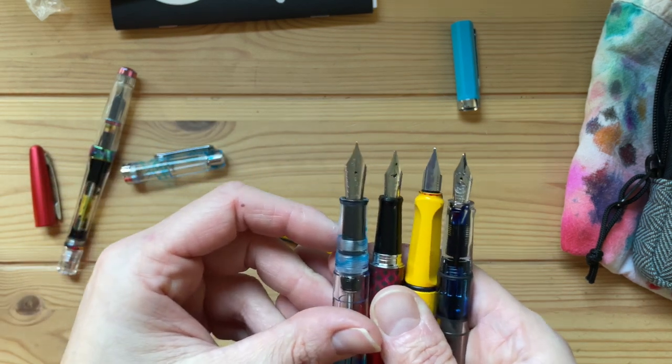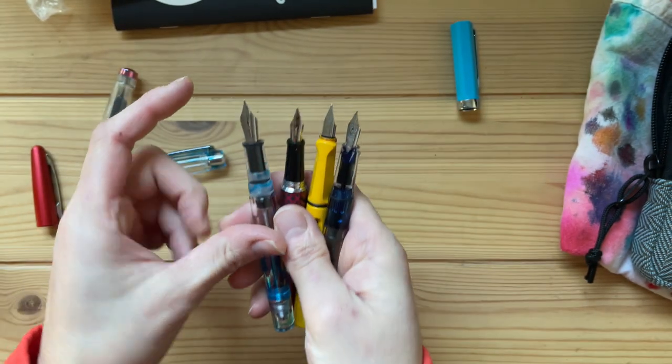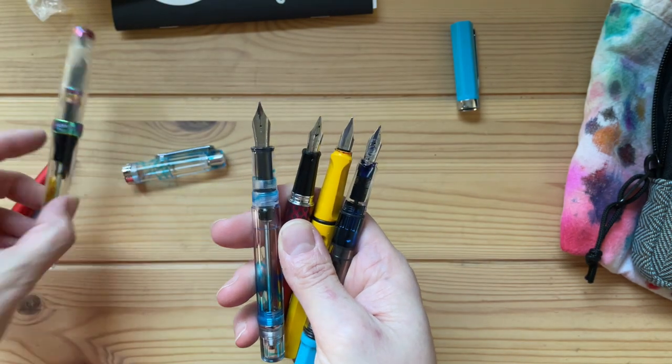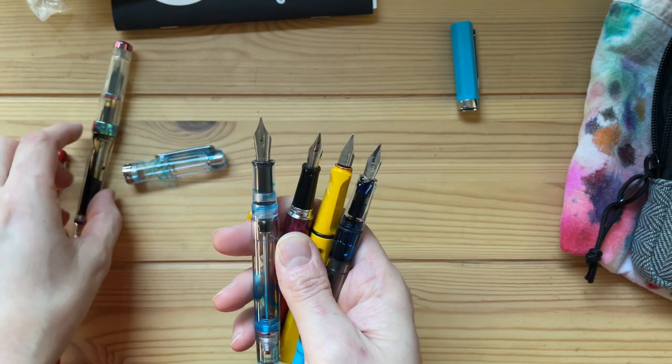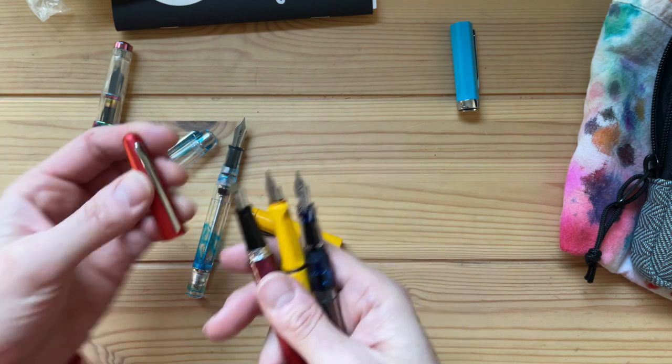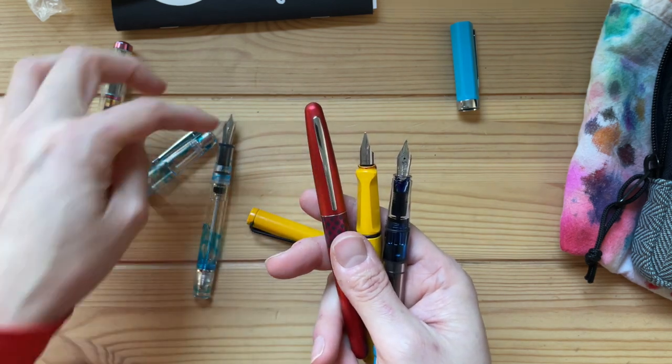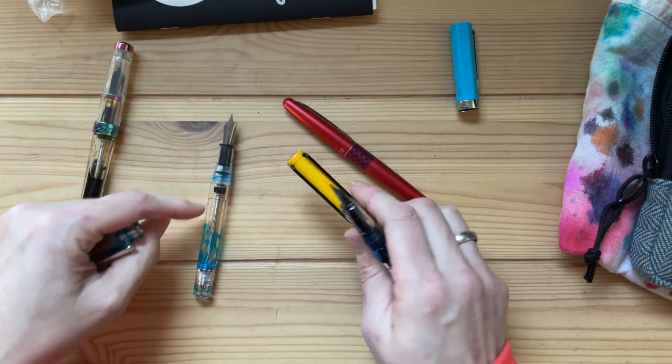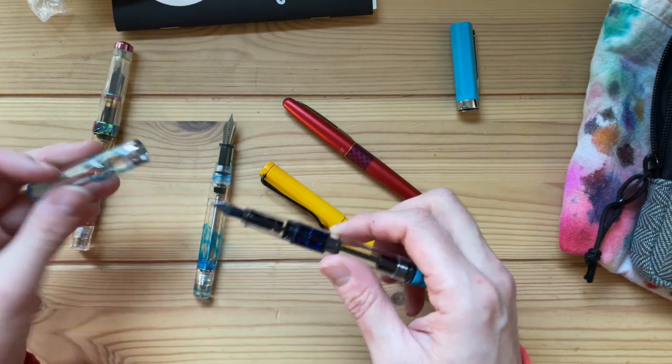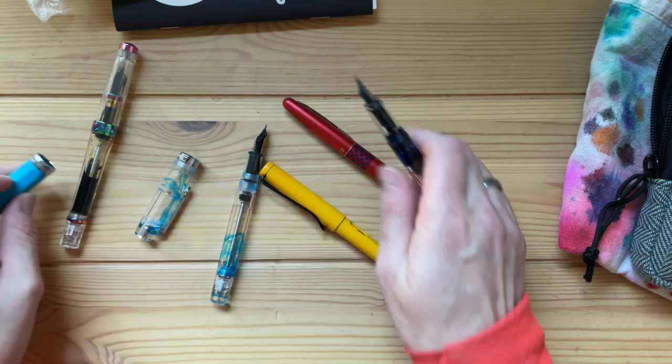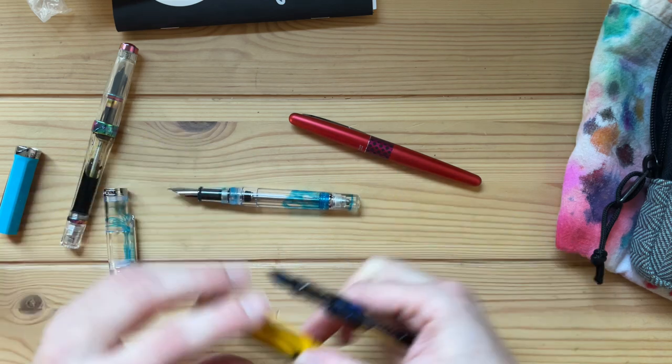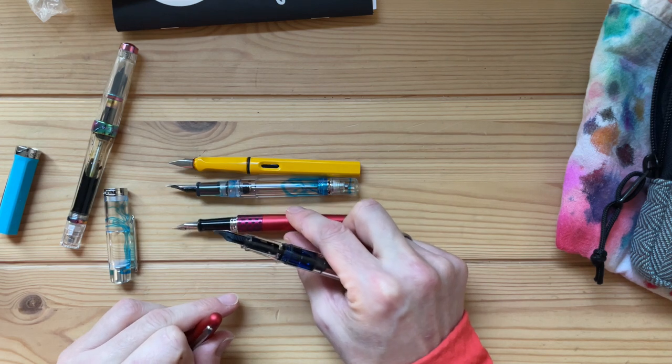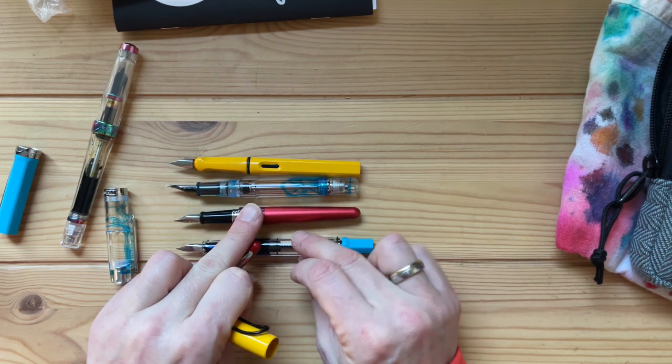If you were to compare this to a same size nib, then you would have to compare it to the VAC 700R. You definitely get more for $20 more. You get a bigger nib. It's a regular size fountain pen.